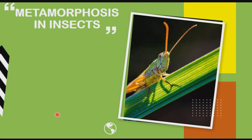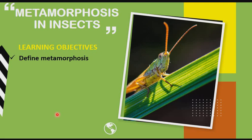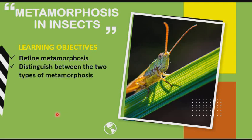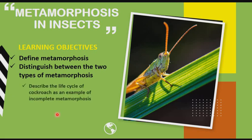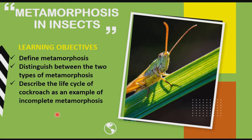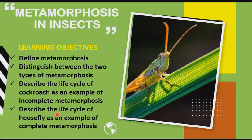Our learning objectives as usual: we should be able to define metamorphosis, distinguish between the two types of metamorphosis, describe the life cycle of a cockroach as an example of incomplete metamorphosis, and describe the life cycle of a housefly as an example of complete metamorphosis.